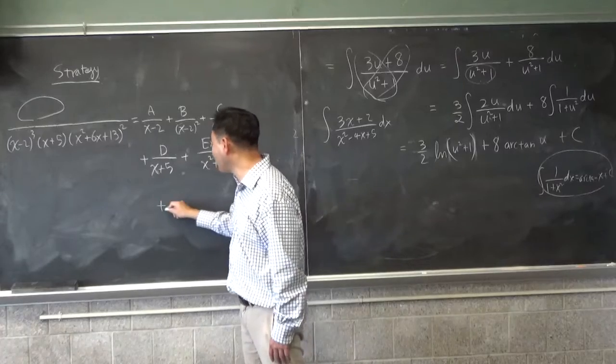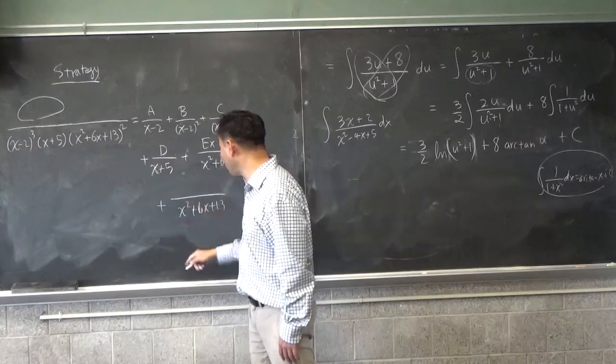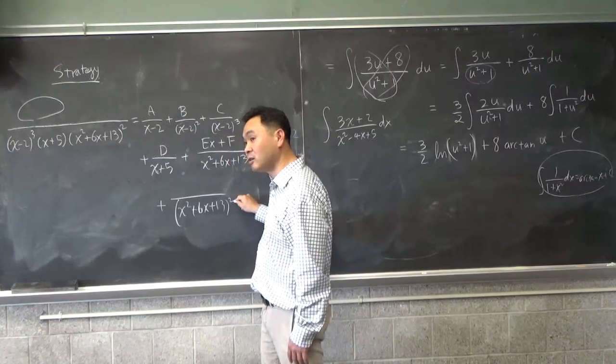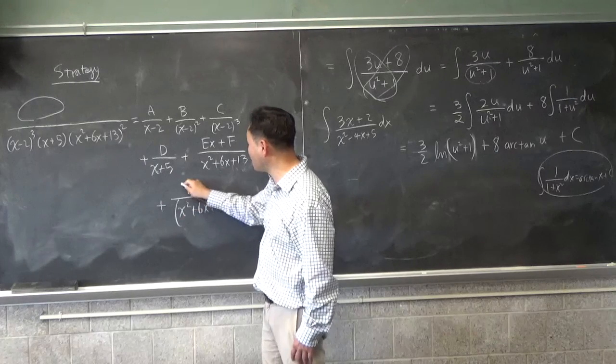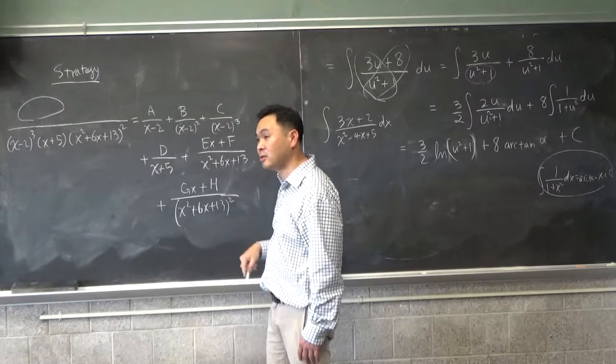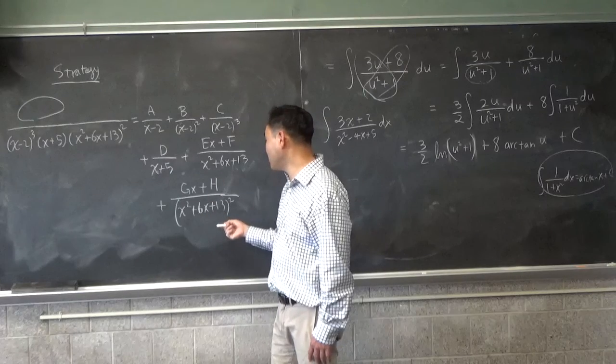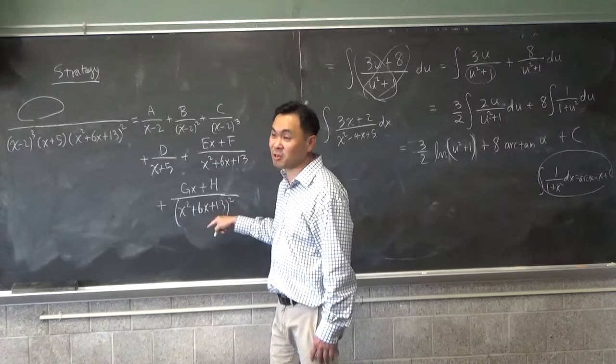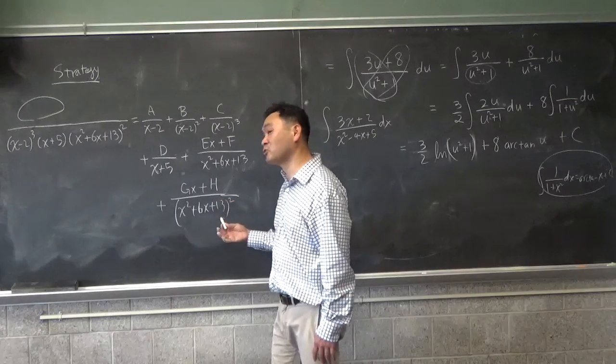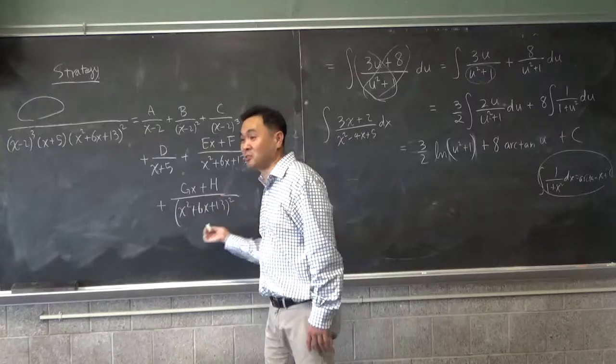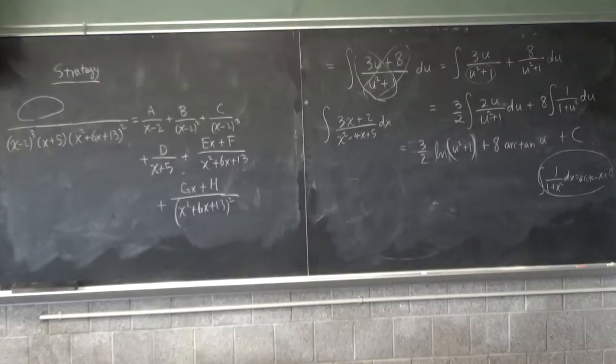And then I haven't shown you how to do this other one, but this can also be done. See, because this is squared, so you better have a squared here. But then if you have that, it's still a quadratic thing, so you have to put gx plus h. Okay? And this can again be integrated by completing the square first, changing the variable again. But then you have to do another change of variable which requires trigonometric substitution. Okay? So that's a very challenging one, but it's doable. So that will be our general strategy of partial fraction expansion. And we're going to do it.